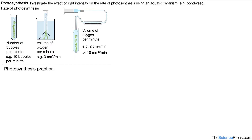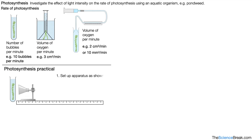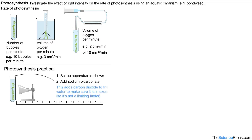Let's take a look at the method. We set up the apparatus as shown with a ruler, our pondweed, and a lamp. We're going to look at the effect of distance of the lamp versus the rate of photosynthesis. We would add sodium bicarbonate to the water, which adds carbon dioxide to the water to make sure it is in excess so that it is not a limiting factor.